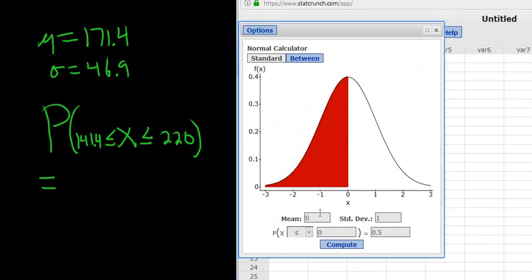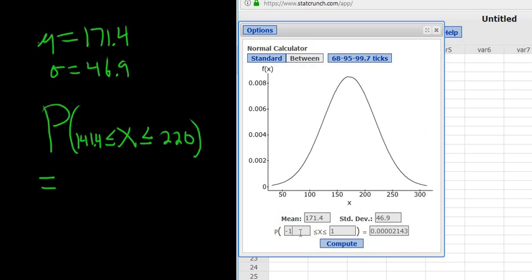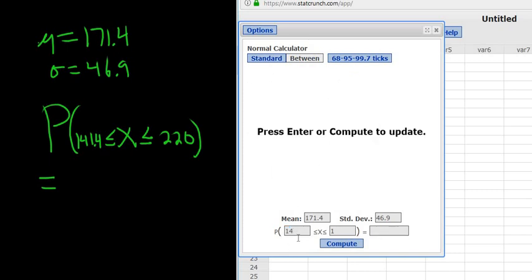So the mean here is 171.4. Standard deviation is 46.9. And we have to click the Between button. So Between. And then just enter all the numbers. So 141.4 and 220.